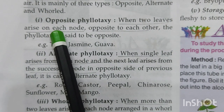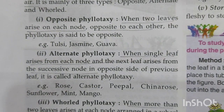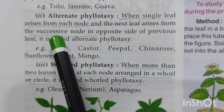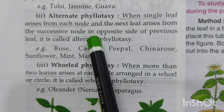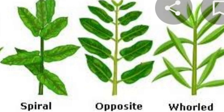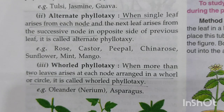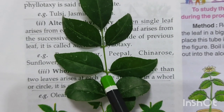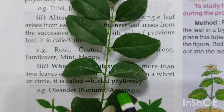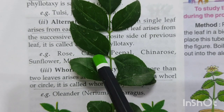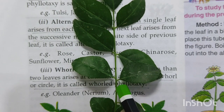In alternate phyllotaxis, a single leaf arises from each node and the next leaf arises from the successive node but in the opposite direction. This is known as alternate phyllotaxis, as found in rose, castor, peepal, mint, and mango. The next leaf arises from the successive node in the opposite direction — one leaf from one node, the other from the next node going in the opposite direction.